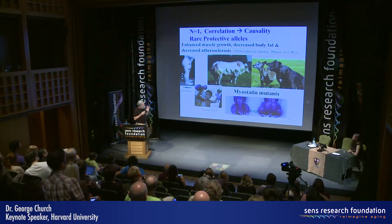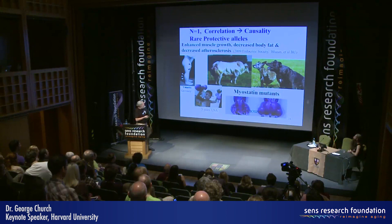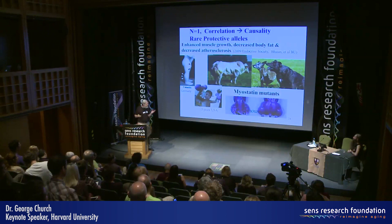The causative alleles can be tested in animals — here are three different animal models: cows, dogs, and mice, where the myostatin double null is shown on the right for dogs and mice. This is accompanied in some of these small organisms with decreased body fat and decreased atherosclerosis. This is a really interesting example of an n=1 study and causality.